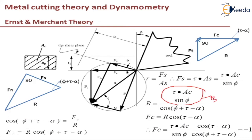This is Fs by cos(phi + tau - alpha). By the triangle, this is tau minus alpha. So cos(tau - alpha) will equal adjacent by hypotenuse, that is Fc by R. Therefore Fc equals R cos(tau - alpha). Fc will equal, instead of R I can substitute this value into this equation. I will get Fc equals tau Ac by sin phi times cos(tau - alpha) by cos(phi + tau - alpha). I got the equation for Fc now. I will call this equation number 1.